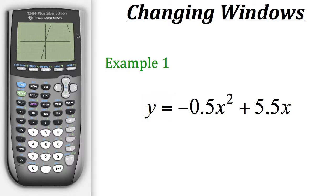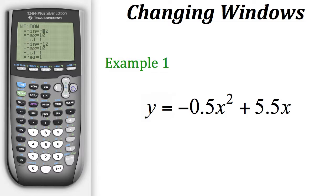First, we don't need any of the extra negative x space, so we can get rid of that by going to our window and reducing x min. Right now it's at negative 10 — let's change it to negative 2 and then graph that.